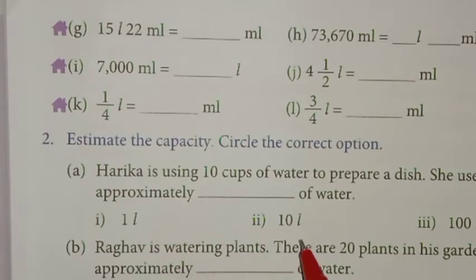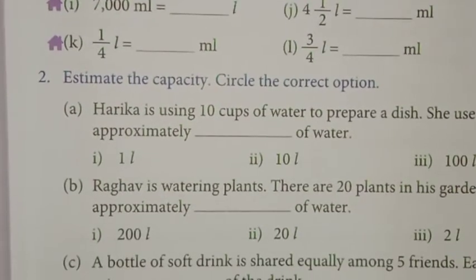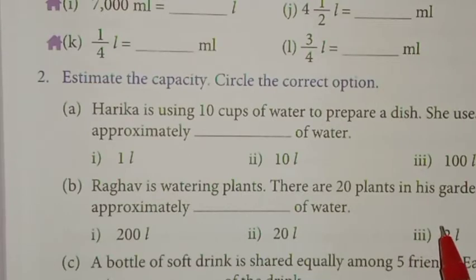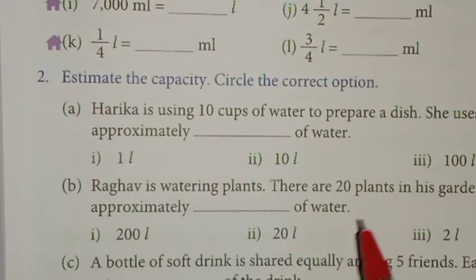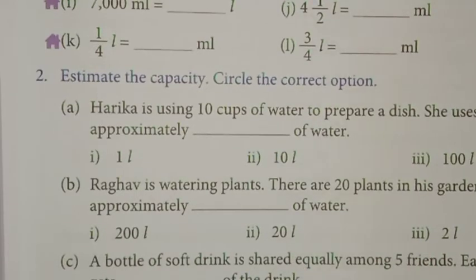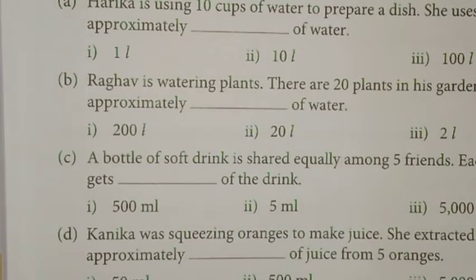Next: Ragu is watering plants. There are 20 plants in his garden. He uses approximately how much water? How many liters of water did Ragu use — is it 21 liters, 20 liters, or 2 liters? You can read the remaining questions and find out the answers.